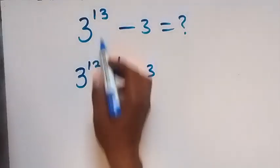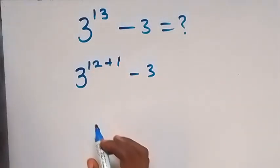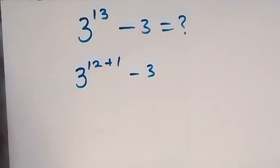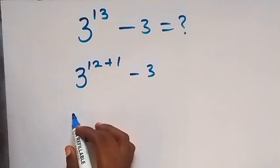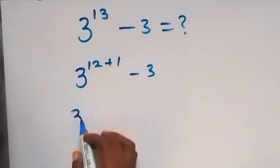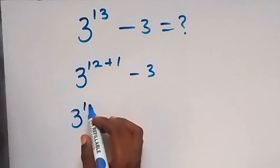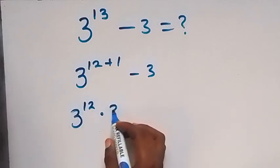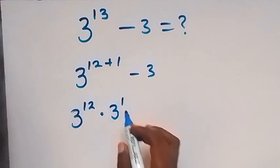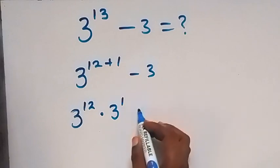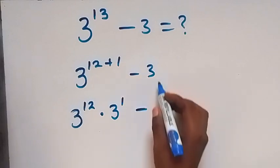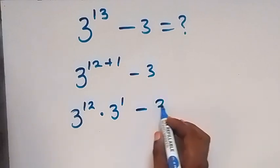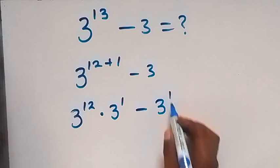12 plus 1 is the same as 13, and then from the law of indices we can separate this. This is 3 raised to power 12 times 3 raised to power 1, then minus 3 raised to power 1.